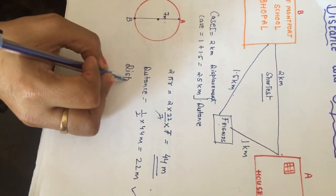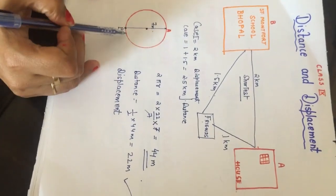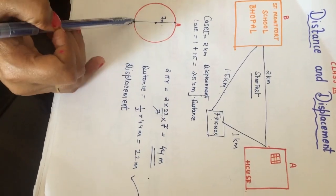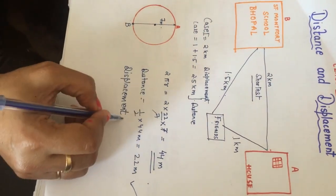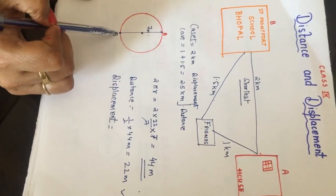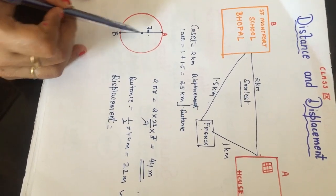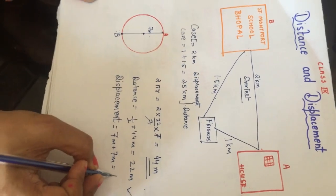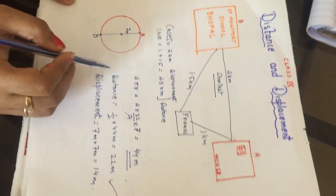Now to calculate displacement in this case — displacement is the shortest distance, which is the straight line joining the initial and final points. So from A to B (diameter), it will be 7 meters plus 7 meters, giving a displacement of 14 meters.